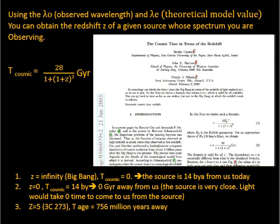For z equals infinity, the t cosmic would turn out to be zero. That is, at z equals infinity, the age of the universe was zero. It was the big bang. This means that the source at z equals infinity must be 14 billion years away from us today because the age of the universe is 14 billion years. And that was the beginning of the universe. At z equals zero, the cosmic time comes out to be 14 billion years. This means that the source must be zero giga years away from us. The source is very close. Light would take zero time to come to us from the source. And that's why it's zero giga years away.